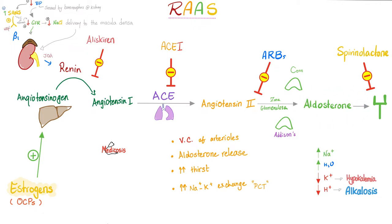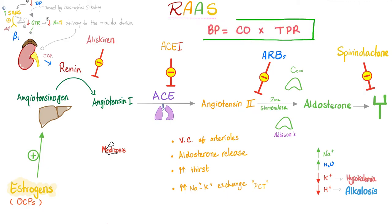Aldosterone has four functions: it reabsorbs salt and water, and excretes potassium and hydrogen. The whole purpose of renin is to raise blood pressure — achieved through angiotensin 2 constricting vessels, and through aldosterone reabsorbing salt and water. Arterial blood pressure equals cardiac output times total peripheral resistance. Constricting vessels decreases radius and increases resistance, raising blood pressure. Reabsorbing salt and water increases extracellular fluid volume, increasing venous return, which increases cardiac output.